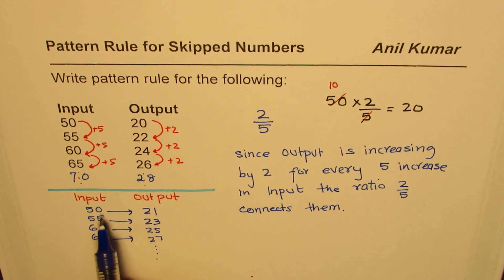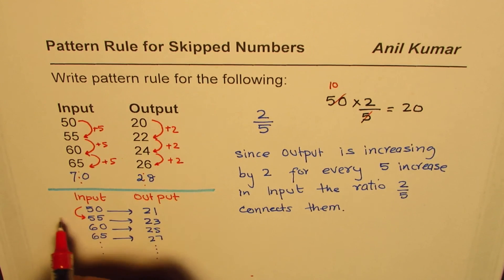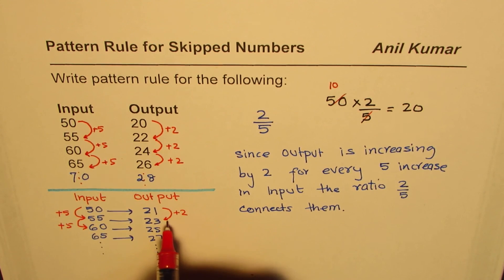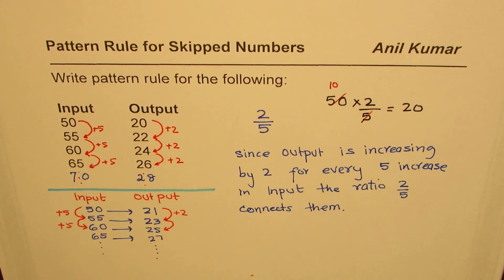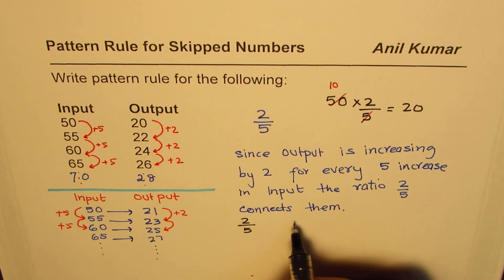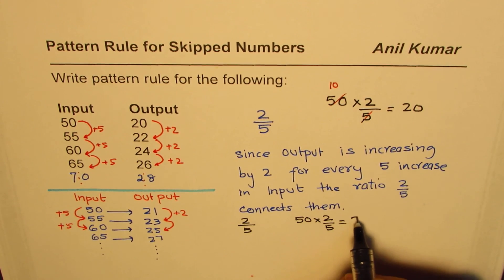Now the question is how will you write a rule for this one? Well here, input is increasing by 5 as in the previous case. The output is increasing by 2, so we know that in the rule the factor 2 over 5 plays an important role. But when you do 50 times 2 over 5, what do you get? We calculate, we get 20, not 21.